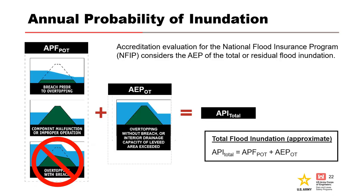For levees, we calculate the residual flood inundation to make a recommendation for NFIP accreditation. The AEP of the residual flood inundation is the total annual probability that the levied area will be inundated due to levee breach prior to overtopping, component malfunction or improper operation, or overtopping without breach. To avoid double counting, overtopping with breach is excluded. The estimated mean annual probability of inundation requires combining the APF for all prior-to-overtopping risk-driving PFMs with the annual probability of inundation due to overtopping without breach.